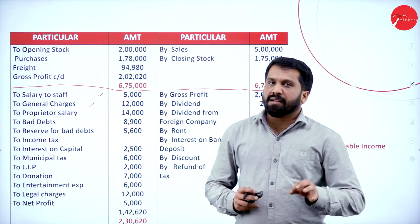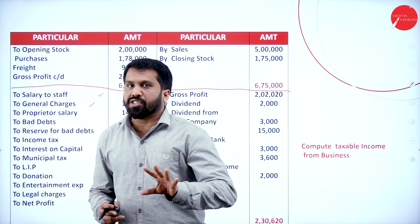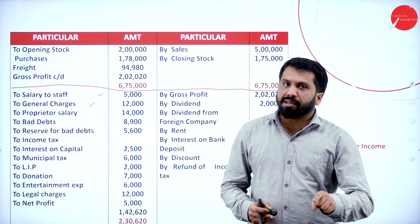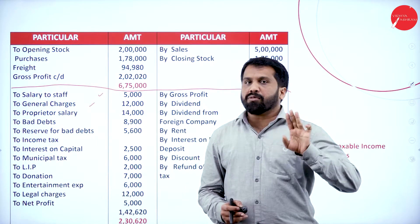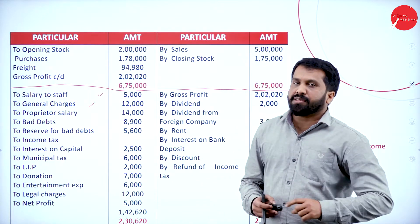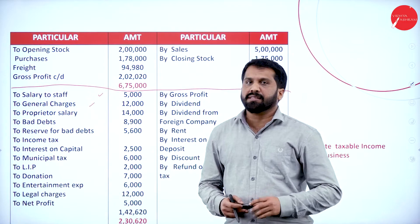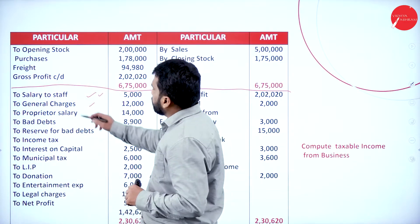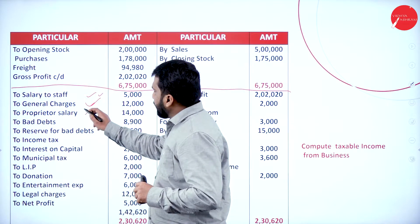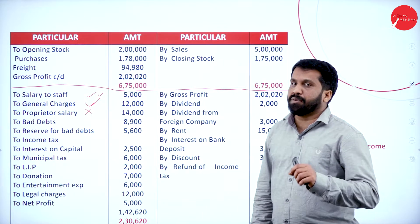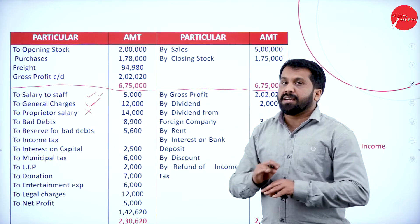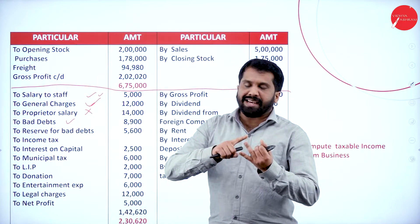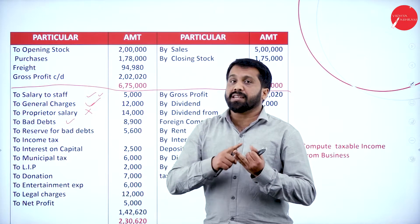In the adjustment, out of 30,000 salary, 5,000 is paid for a watchman for the house. Since that 5,000 is for personal expenses, it must be excluded. Salary to staff is part of business. General charges are part of business. Proprietor's salary is personal — not part of business. Bad debts are part of business, but any provisions or reserves are not.